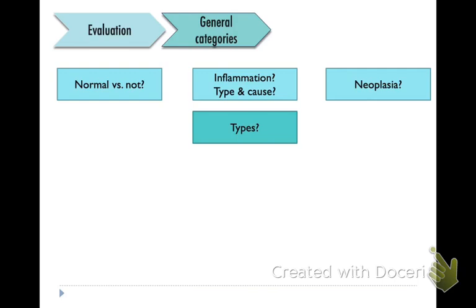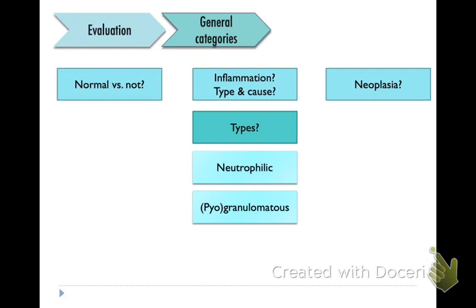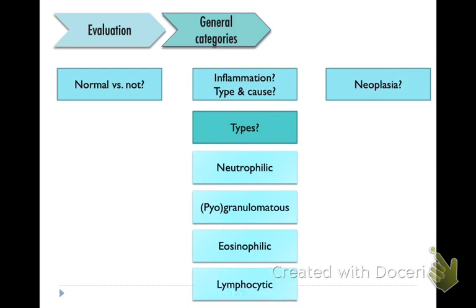If you have inflammation, the types of inflammation that you can have are neutrophilic, piogranulomatous — with the pio part in parentheses because it can just be granulomatous — pio refers to the neutrophilic portion of the inflammation, and eosinophilic as well as lymphocytic types of infiltrates.